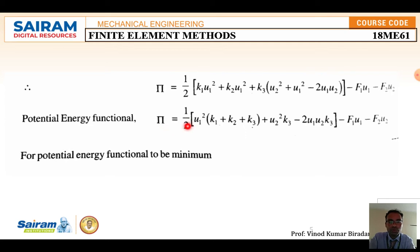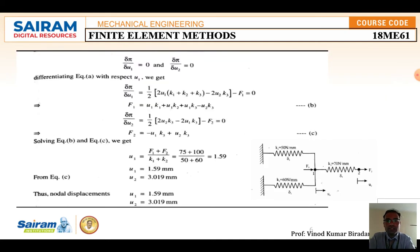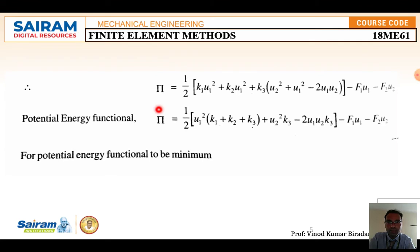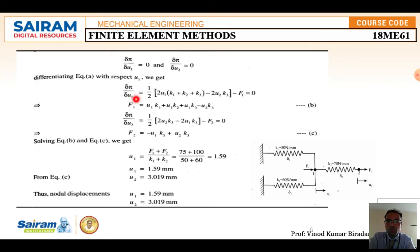For potential energy to be minimum, differentiate pi with respect to u1 and u2 and set each to zero. Differentiating with respect to u1: ∂π/∂u1 = u1·(k1 + k2 + k3) − u2·k3 − F1 = 0. This gives equation 1: F1 = u1·k1 + u1·k2 + u1·k3 − u2·k3.